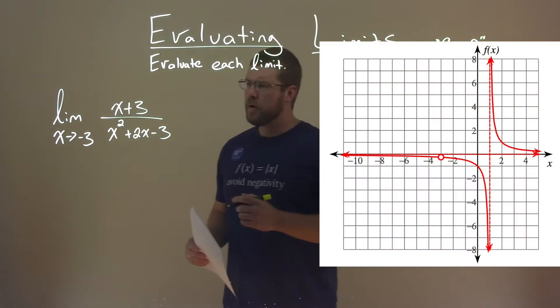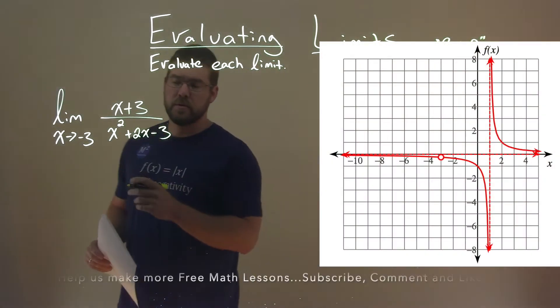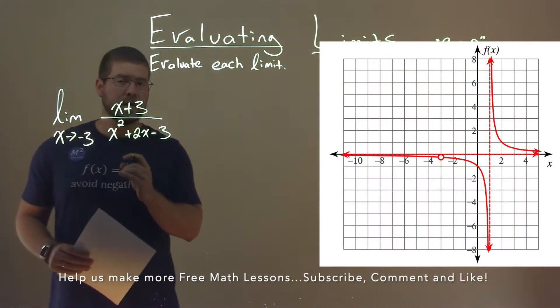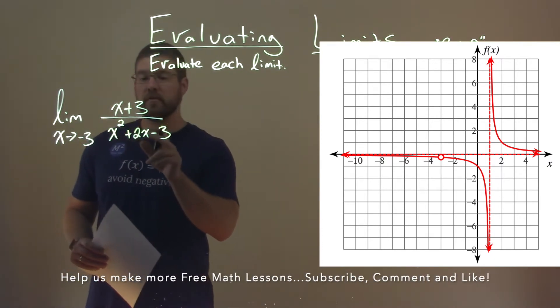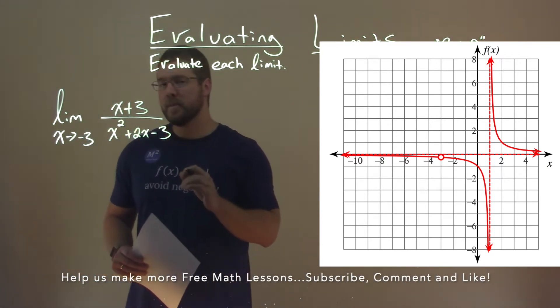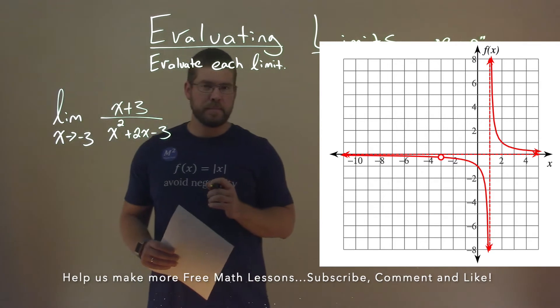We're given this problem right here: the limit as x approaches negative 3 of x plus 3 over x squared plus 2x minus 3. We need to evaluate this limit.